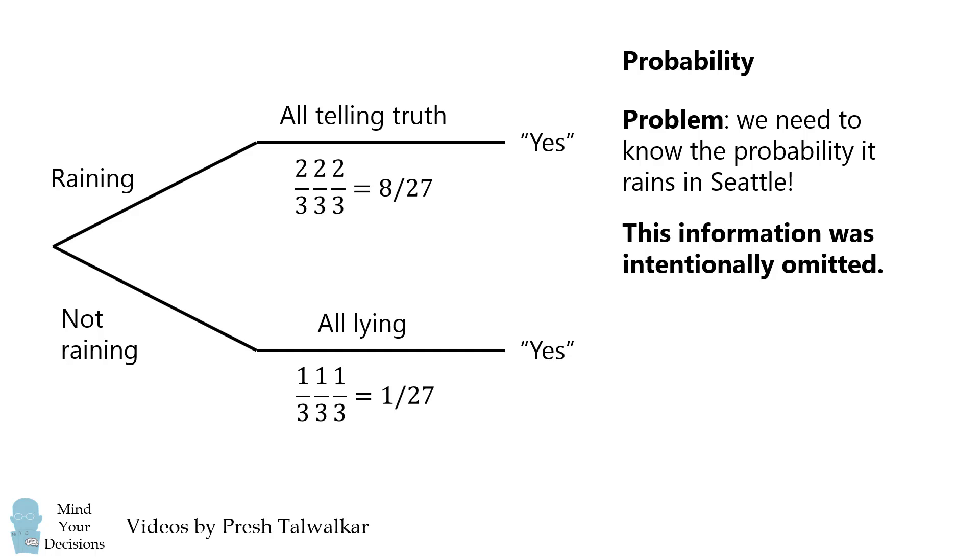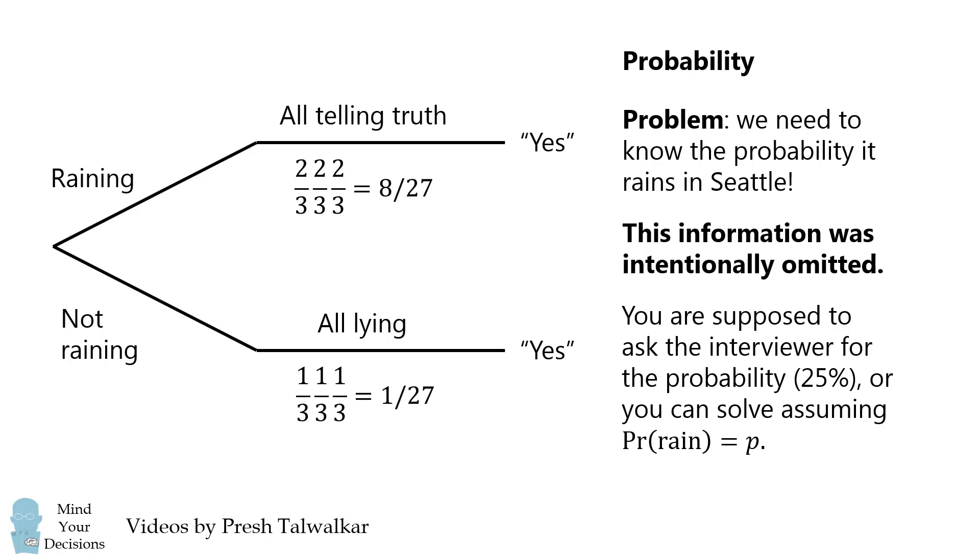So what you're supposed to do at this point is ask the interviewer for the probability. The interviewer might tell you that it's 25%, or they might tell you to solve for the general case that the probability of rain is equal to P.